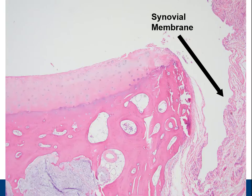This is the synovial membrane, or synovium. It forms the boundary of the joint space. The synovial membrane is a layer of connective tissue that lines the cavities of joints and tendons and makes synovial fluid, which has a lubricating function.